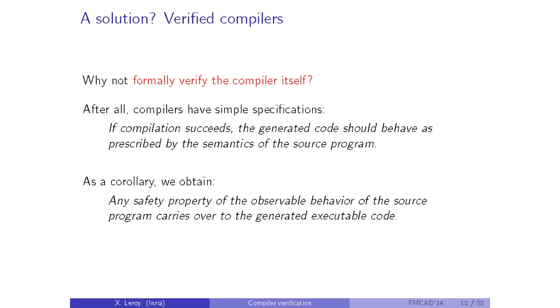The approach I've been working on for the last eight years is formal verification of compilers. Compilers are programs like any other, so we can apply formal verification — typically program proof — to them. They have a fairly simple specification: semantic preservation. If compilation succeeds without errors, the generated code should behave as prescribed by the semantics of the source program. Once proved, any safety property of the observable behavior of the source program carries over to the generated executable code, making source-level formal verification much more justified.